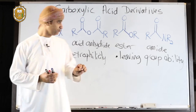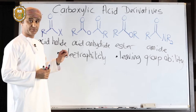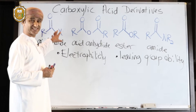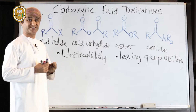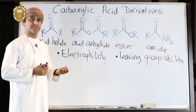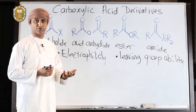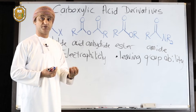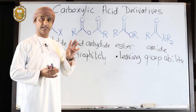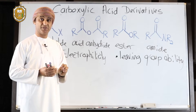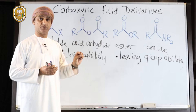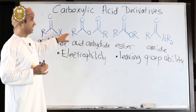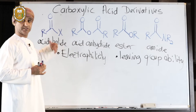A good leaving group should be a weak base and a stable ion. The weakest base would be the best leaving group, and the most stable ion would also be the best leaving group. Another way to assess leaving group ability is to look at the pKa of the corresponding conjugate acid: a strong acid produces a weak conjugate base, hence a stable ion and a good leaving group, while a very weak acid produces a very strong base and a very poor leaving group.